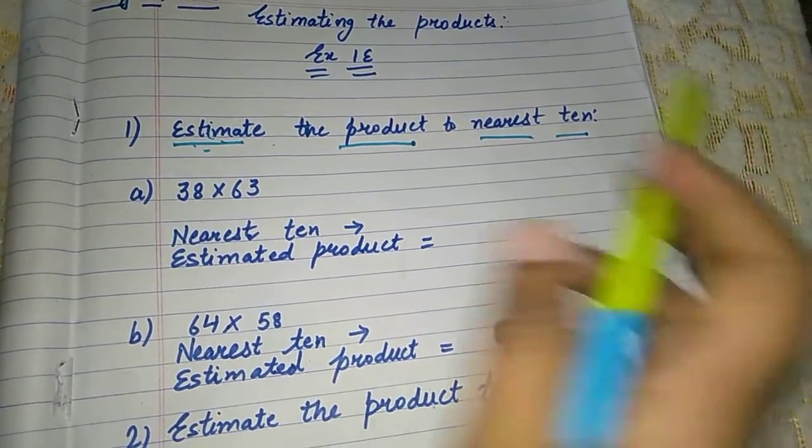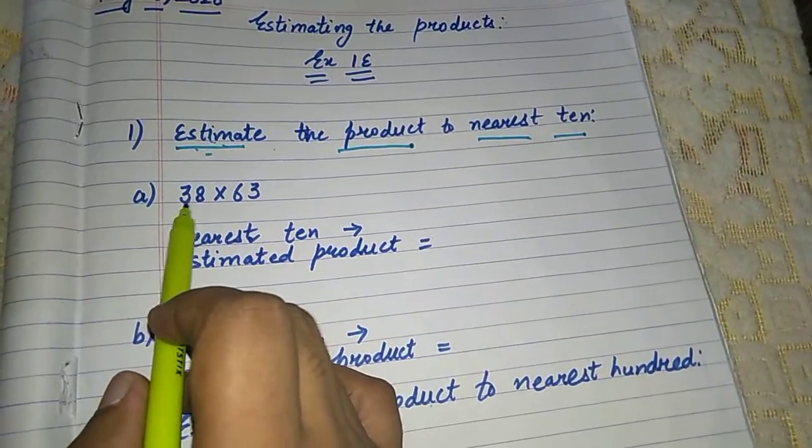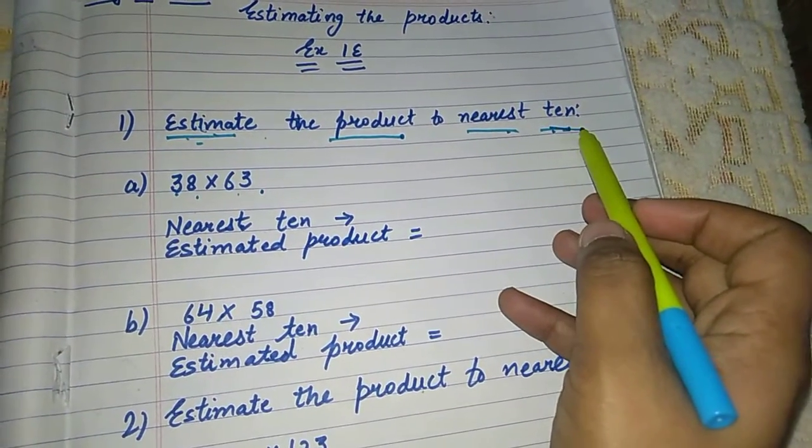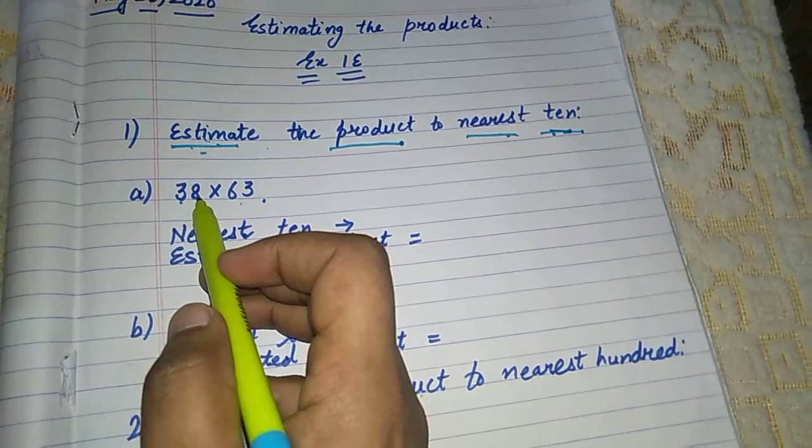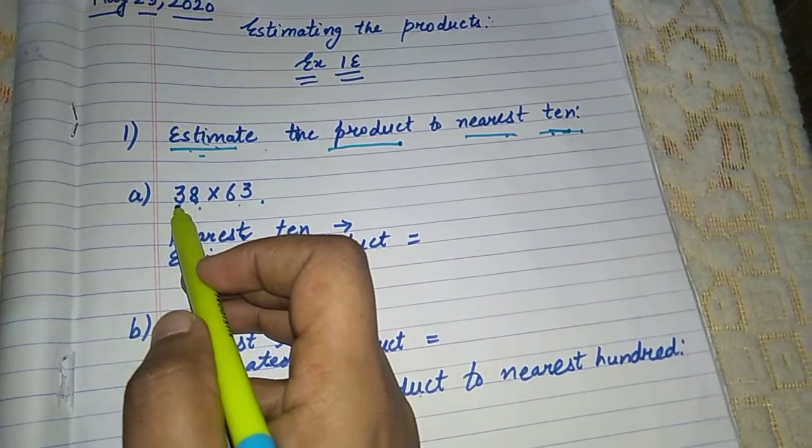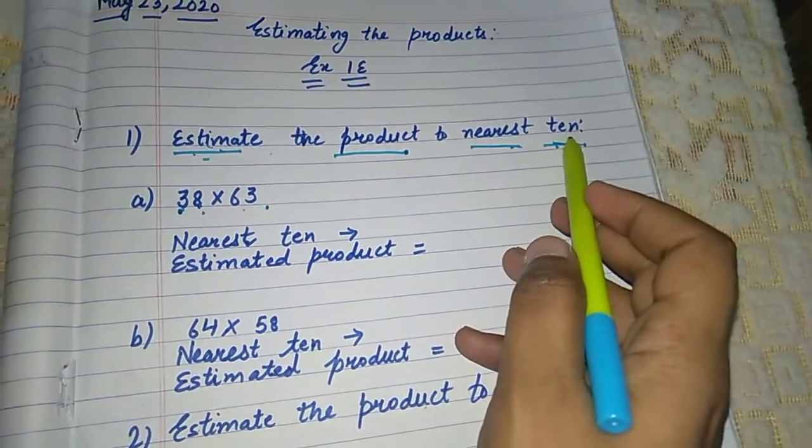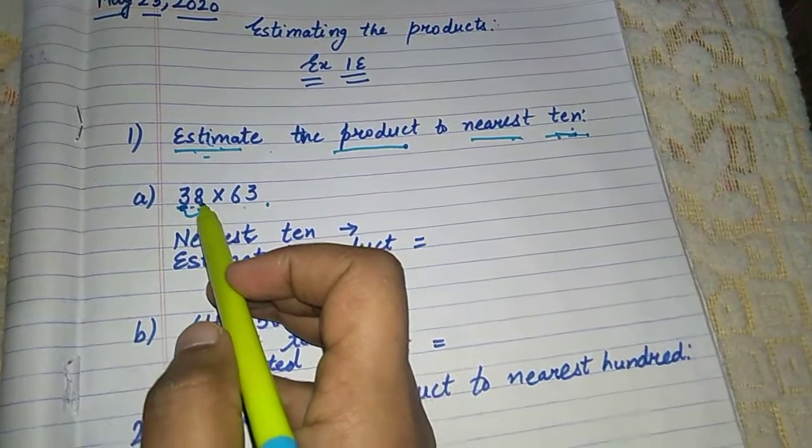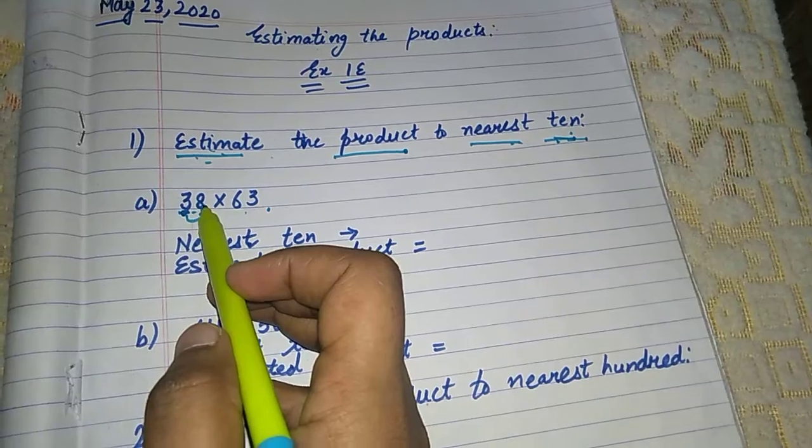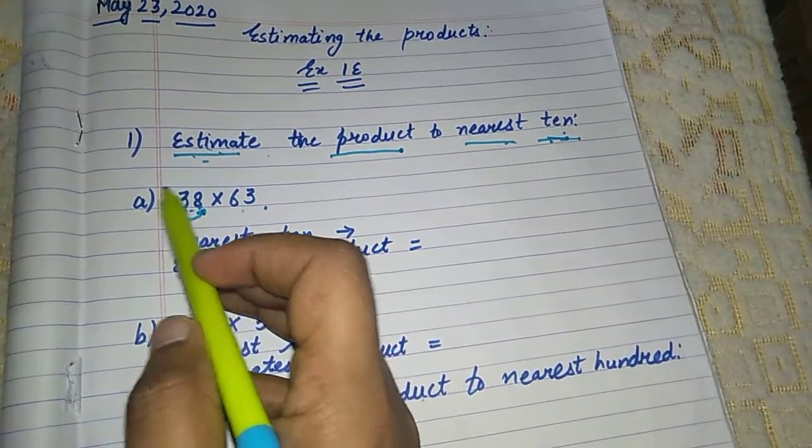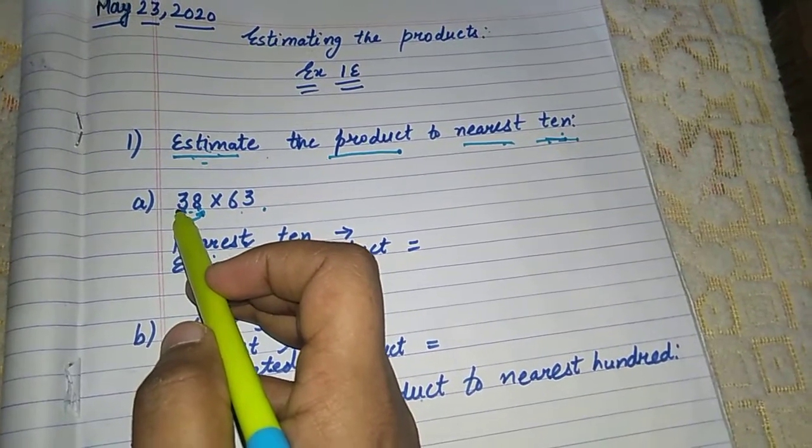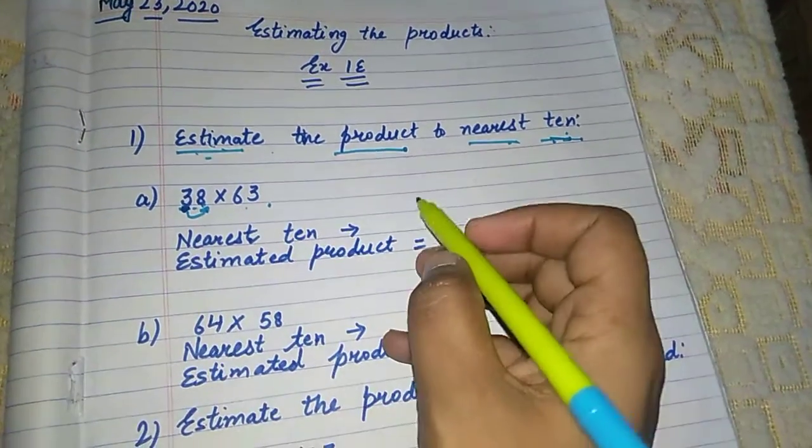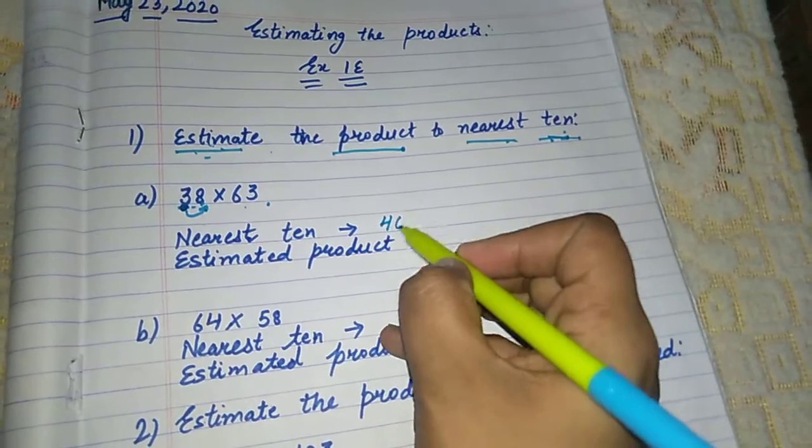First question is estimate the product to nearest ten. So let's see how will you do it. The first is 38 multiply 63. You have to round to nearest ten. So you have to find tens place. These places are here. That means underline the ten and check the ones place digit. If it is more than five, that means you will add one in the next term. That means this side, like in tens term, we will add one. So what will be the nearest ten? Forty.